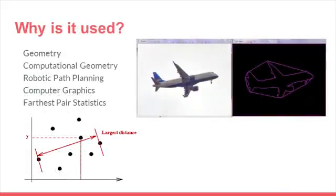Finding the convex hull is important because it's used in both geometry, computational geometry, planning paths for robots, computer graphics for lighting, shadows, and faces, as well as farthest pair of statistics.